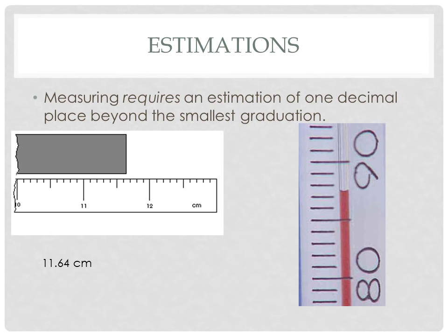Here's another example — a thermometer. We can see that this is marked every whole degree Celsius. Here's the 80 mark, and we go 81, 82, 83, 84, et cetera up to 90. So that means we can estimate to the tenth of a degree. When I look at this, we are definitely between 87 and 88 degrees Celsius — those would be known digits. We need to estimate, and we look at the very bottom of the curve in the liquid level, called a meniscus. You might estimate it's halfway between, so in this case I say 87.5 degrees Celsius.